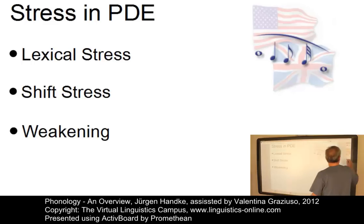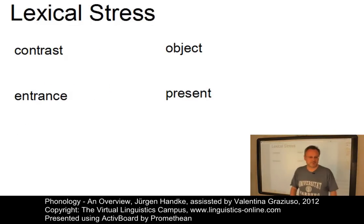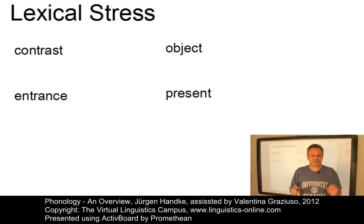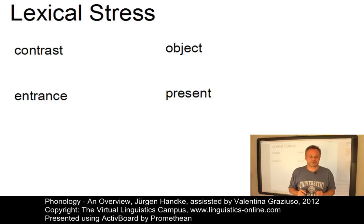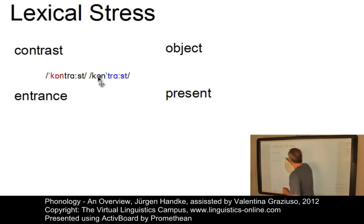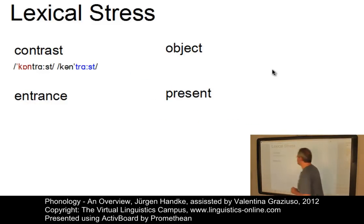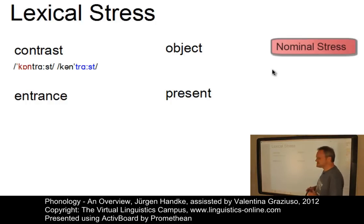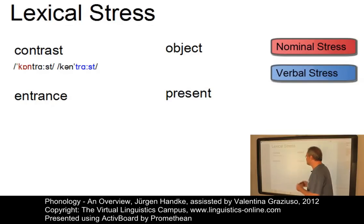Let's look at lexical stress first. In a group of primarily disyllabic words — that is, words consisting of two syllables — which have their origin in the Romance languages, the placement of stress helps to distinguish their word class. Two stress patterns can be defined for such items. The item 'contrast' versus 'contrast': marked in red is the nominal stress pattern where the stress falls on the first syllable, and marked in blue is the verbal stress pattern where the stress falls on the second syllable.